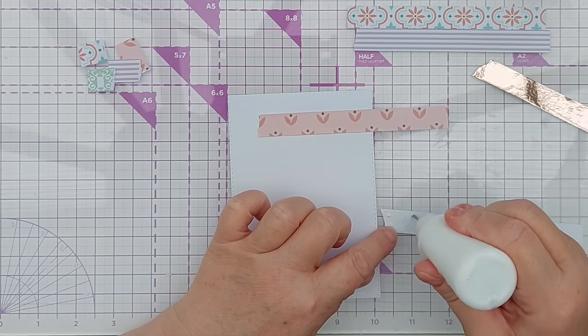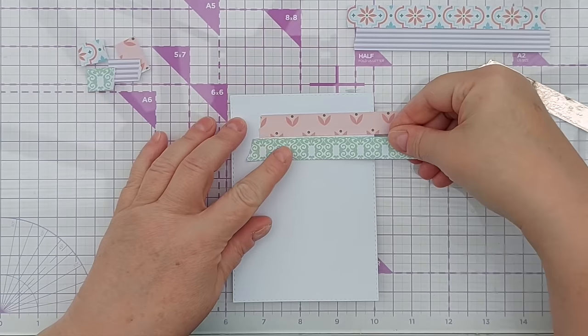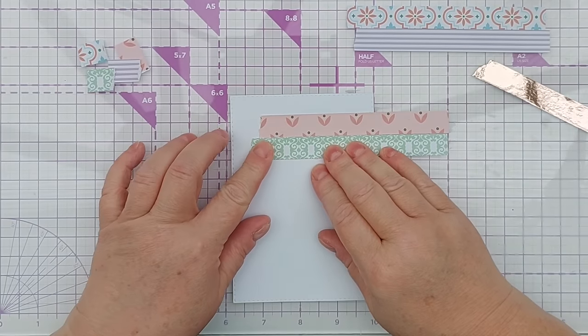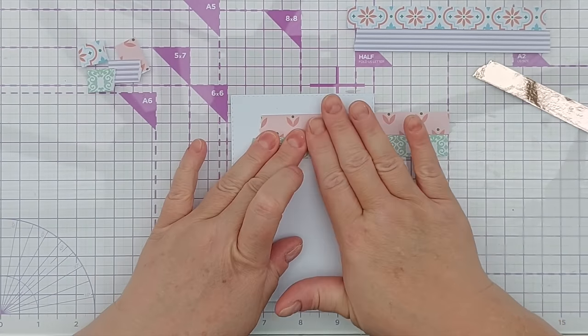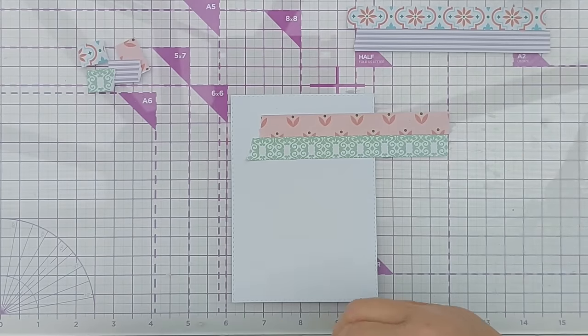Next I'm going to go green. Pop that on, butt it right up, have it extend out a little bit further and now I'm going to put my rose gold.